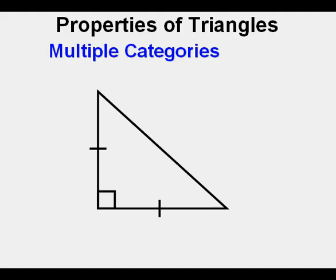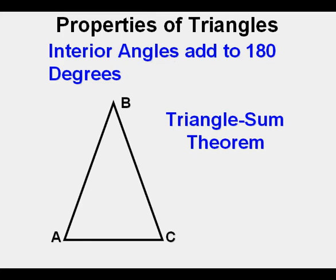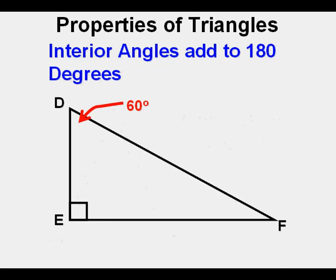Another useful characteristic of triangles is that measures of their interior angles add to 180 degrees. This is called the triangle sum theorem. So in this triangle, angles A, B, and C added together or their sum equal 180 degrees.